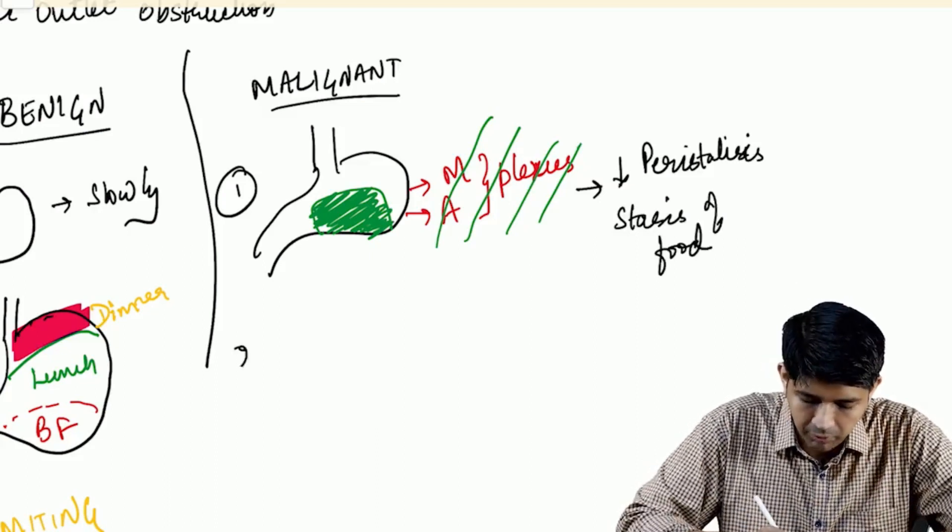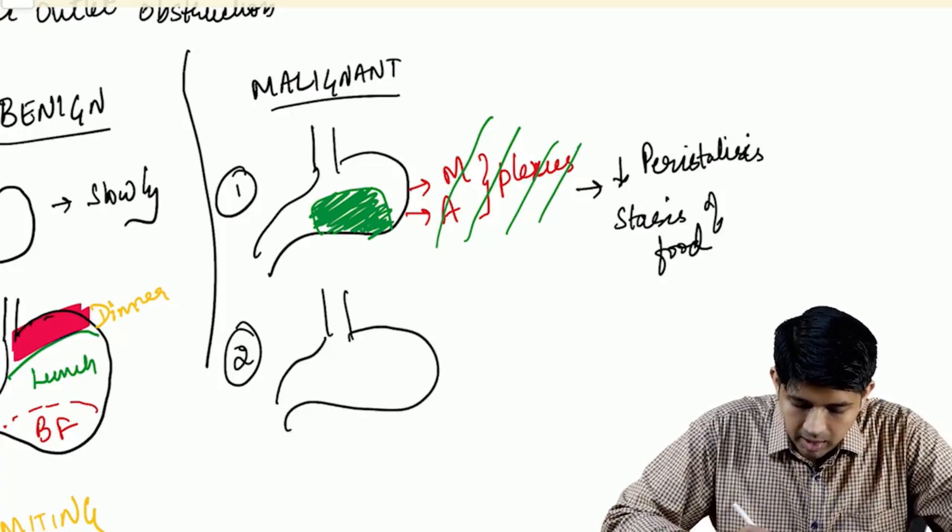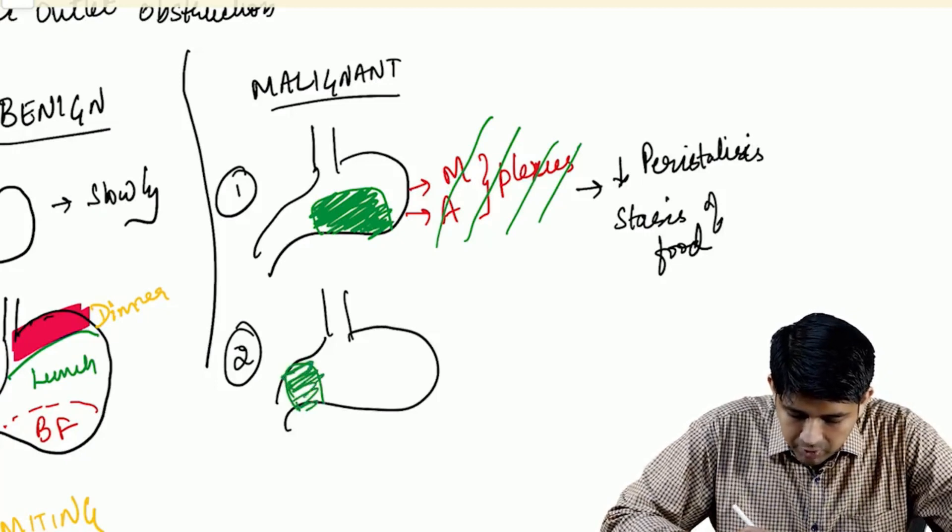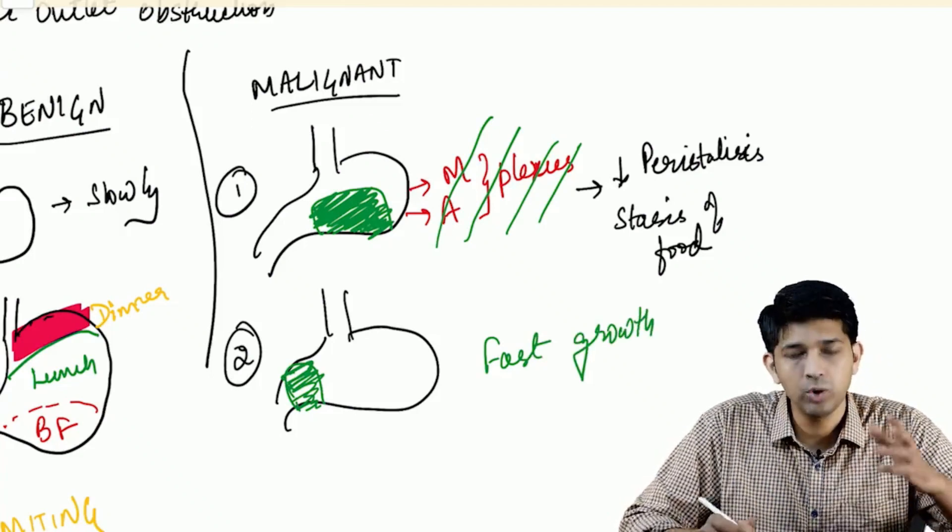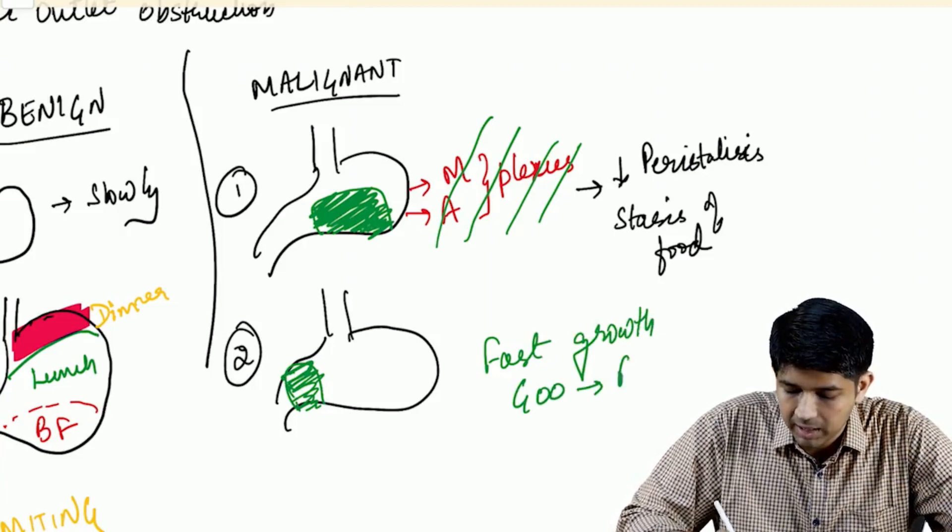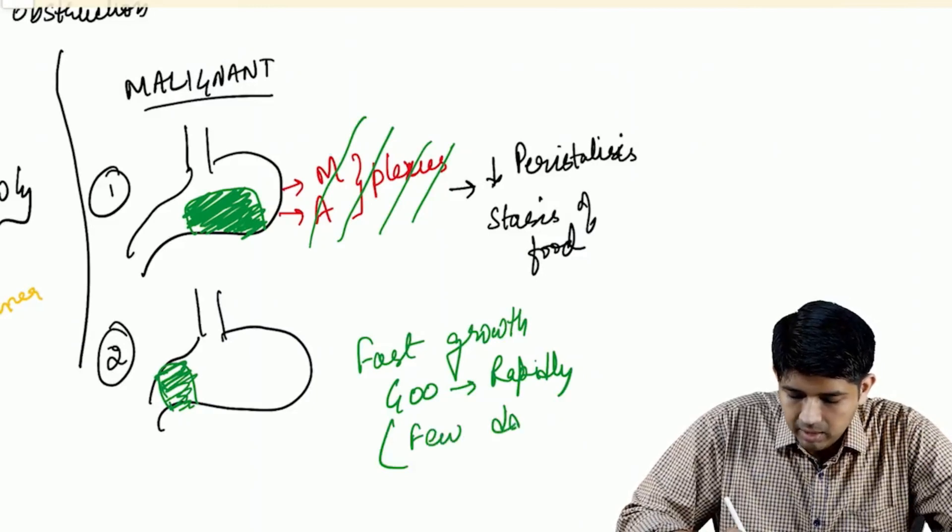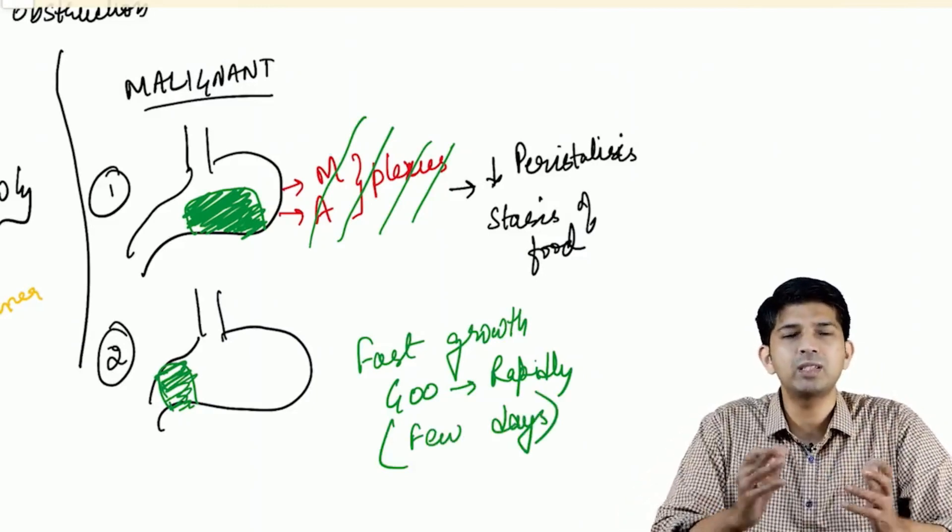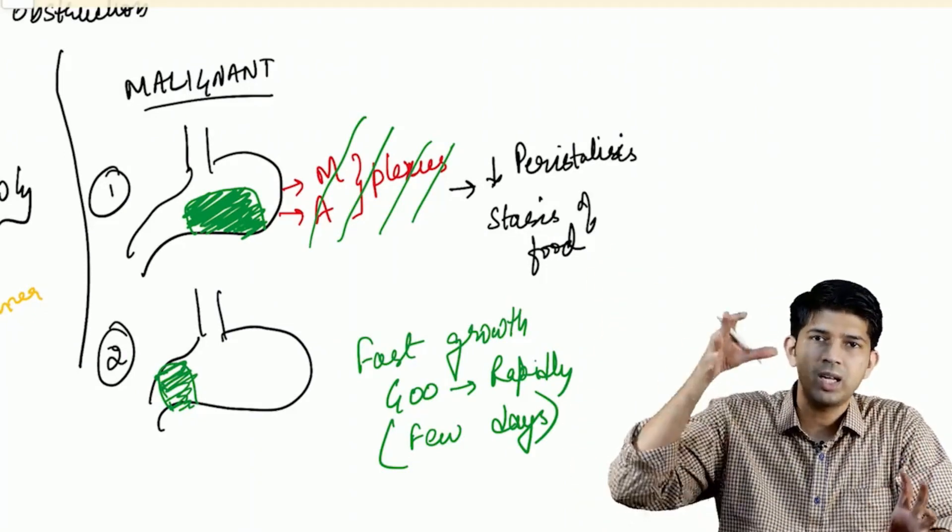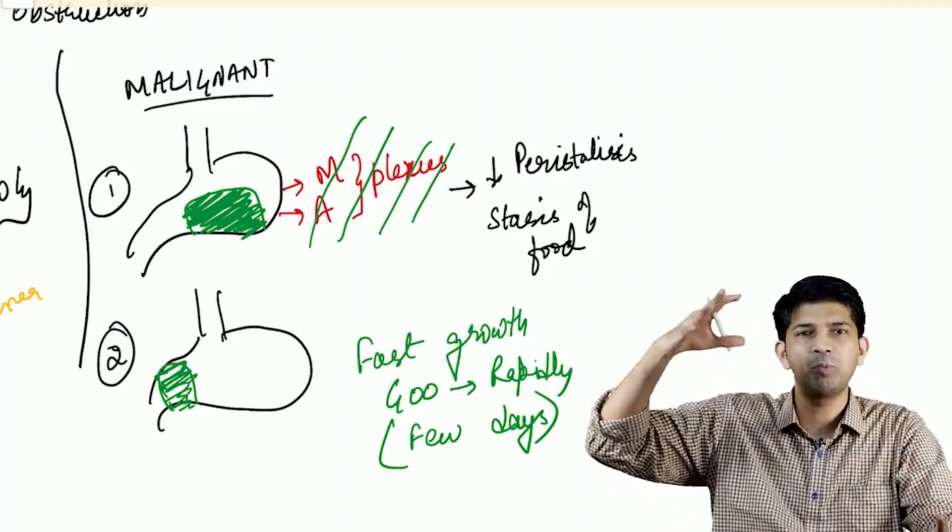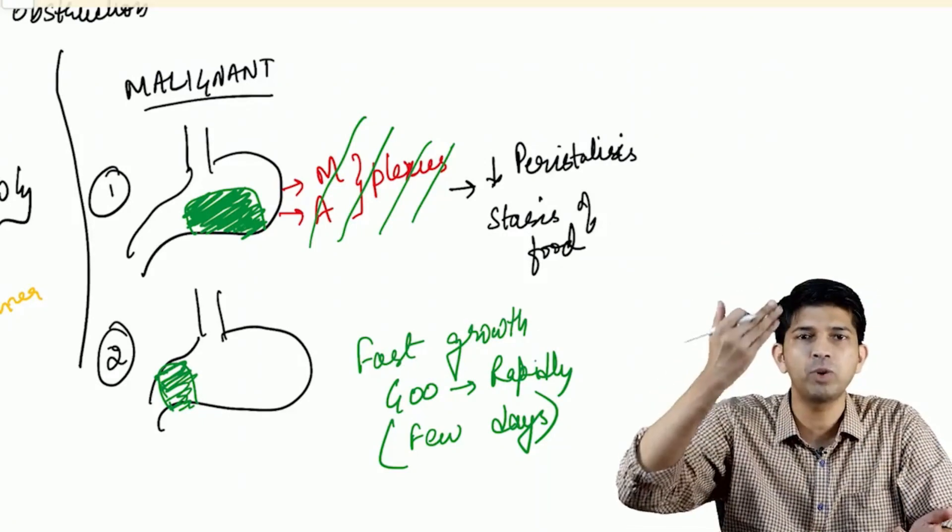It doesn't go into the duodenum - that is the first point. Second point: in CA stomach, the growth is very fast. It is an aggressive tumor. This fast growth causes gastric outlet obstruction rapidly - it happens in a matter of few days. When it happens in a matter of few days, the stomach doesn't have enough time to distend. Earlier, it kept on pushing over a period of months, but in very few days it tries to push but is unable to. So the only thing it can do is push the food out, and the patient will have vomiting.